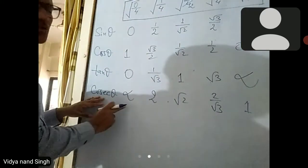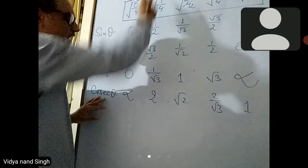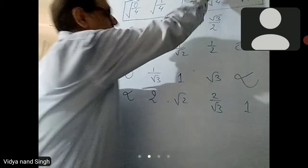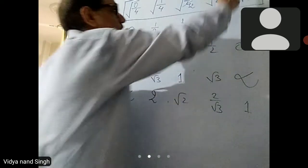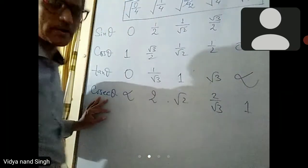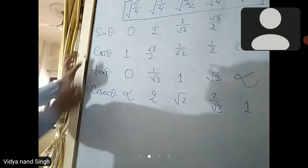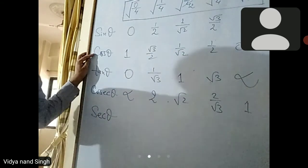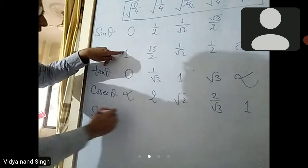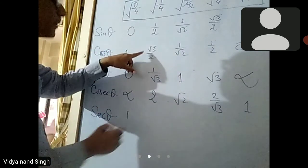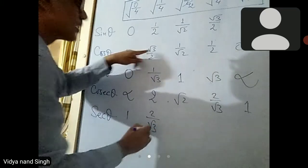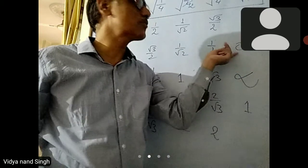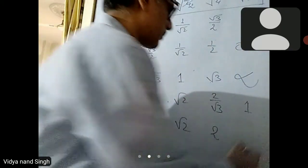Cos x 0° equals 1. Cos x 30°. Cos x 45° equals 2. Cos x 60° equals 2 by root 3. Cos x 90° equals 1. So cos x: 1 by root 2, 6 by root 2, here 2 by 1 so 2, and 0 means 1 by 0, which means infinity — meaningless.